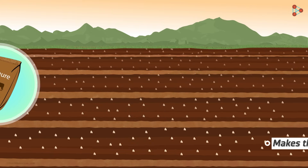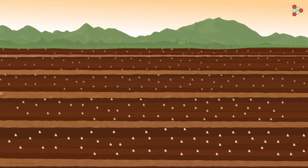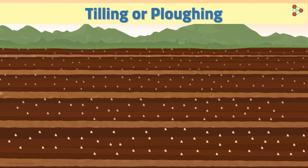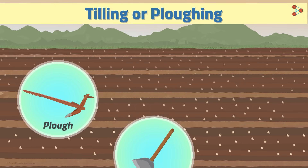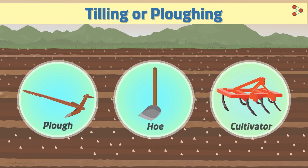Now let us look closely at the equipment that aids the process of tilling or ploughing the land. There are mainly three types of equipment used in the first stage of agriculture: a plough, a hoe, and a cultivator. We will study each of them in detail in our next video.